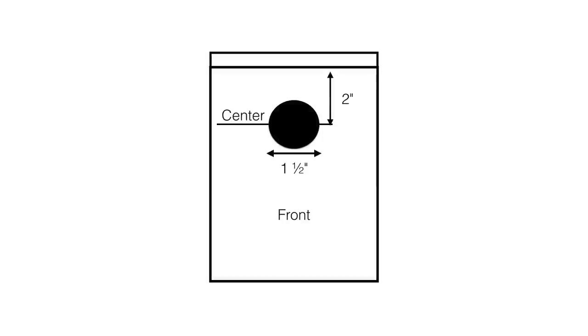And this is the front of the birdhouse. You're two inches down, an inch and a half wide on the hole. That's pretty specific. It has to be that way for the bluebirds. And it should be fine.